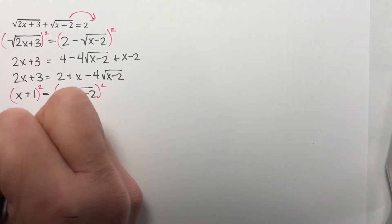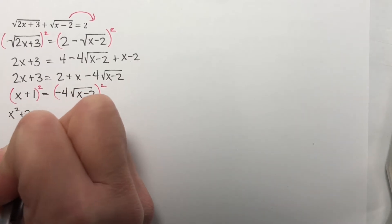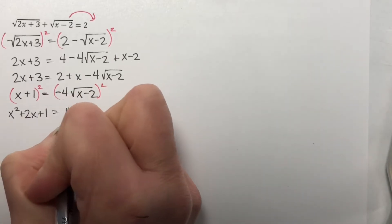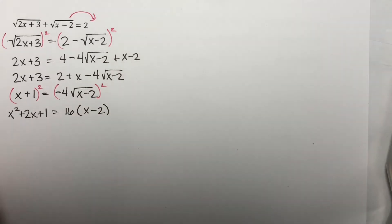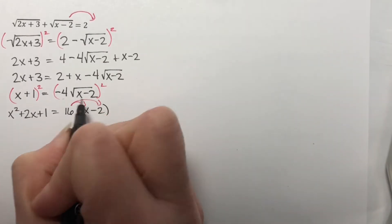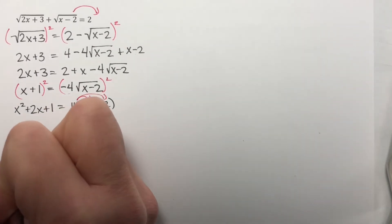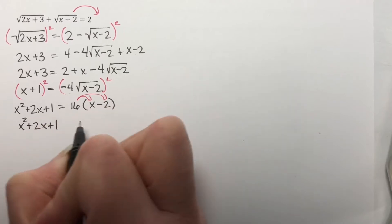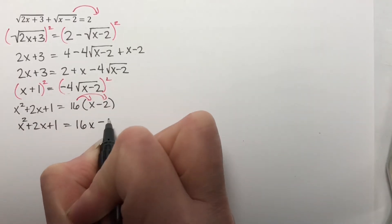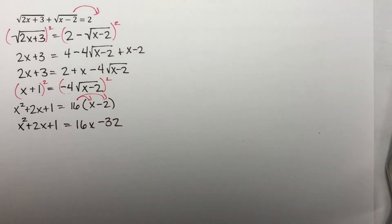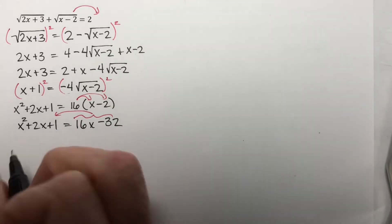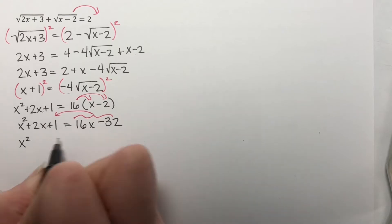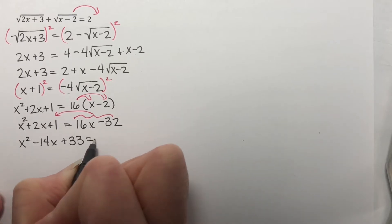So over here, I get x squared plus 2x plus 1. Here, I square the negative 4 to get 16, and then I square the square root, so I have x minus 2. Now distribute here, and I get x squared plus 2x plus 1 is equal to 16x minus 32. Now I'm going to move both of these over to here. So I get x squared, that's going to be minus 14x plus 33, equals 0.